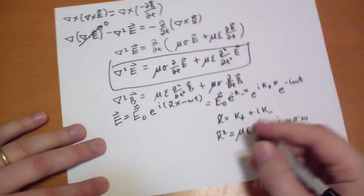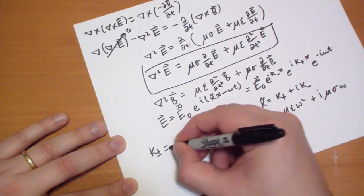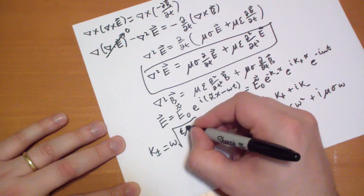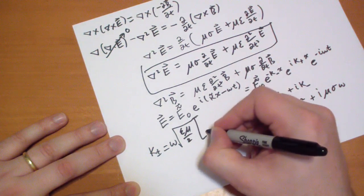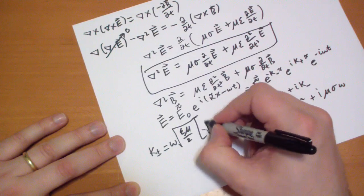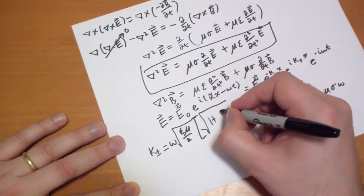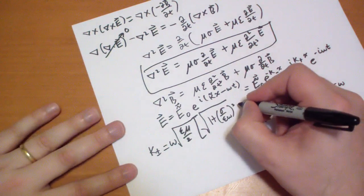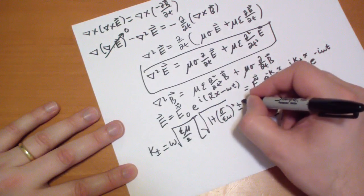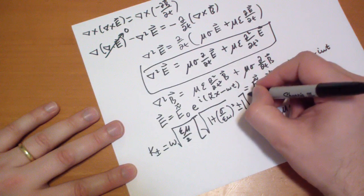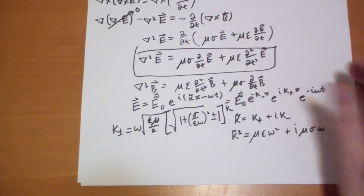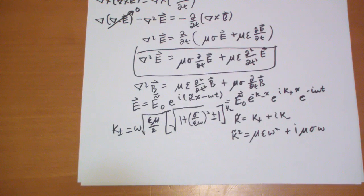So how do you calculate kappa plus and kappa minus? Well kappa plus or minus is equal to omega times the square root of epsilon mu over two times the square root of something big of one plus sigma over epsilon omega squared and then plus or minus depending on which one you're doing one and all of that is to the square root that's the square root of a square root of plus or minus one. I hope this isn't too confusing.